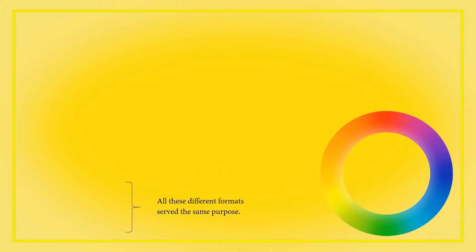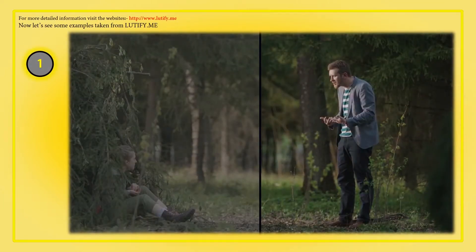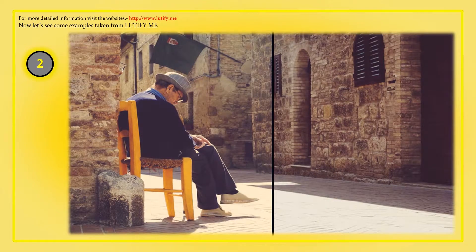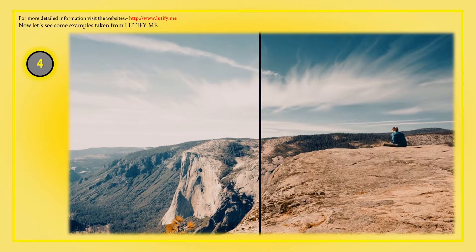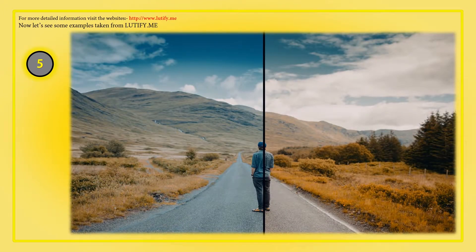Let's see some images without and with color LUTs applied. The following images are taken from Lutify.me website for tutorial purposes. If you are really interested and want to know more about color grading and how to improve existing video and photos by applying different LUTs, go to Lutify.me where you will find everything about color grading in very detailed manner. Lutify.me is a great website to learn in-depth color grading, color adjustments, and film emulation.